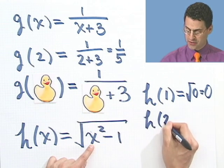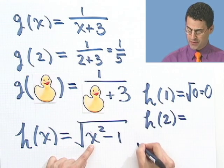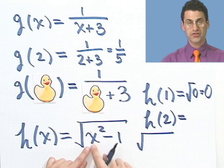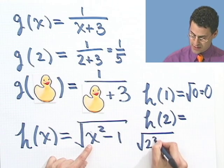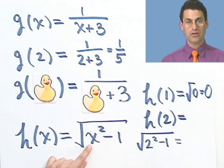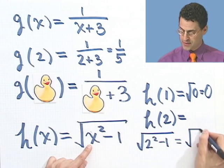What is h of 2? h of 2 would equal the square root of, I put in a 2 here, so I'd see 2 squared minus 1, which equals 4 minus 1, which is 3, so the square root of 3.